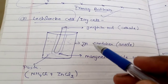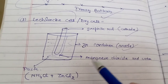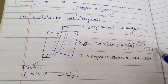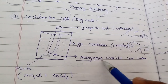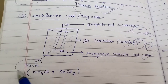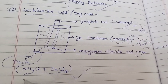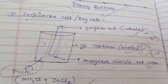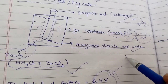The dry cell is called the Leclanche cell. It has a graphite rod as the cathode. A paste of ammonium chloride and zinc chloride is used, in which the reaction takes place. This gives us a potential difference - the battery potential of a dry cell is 1.5 volts. This is the cell we use in watches and small devices.